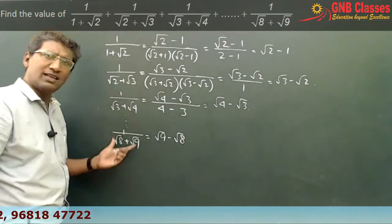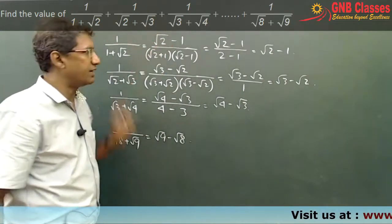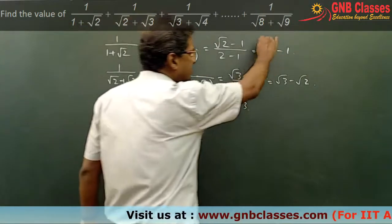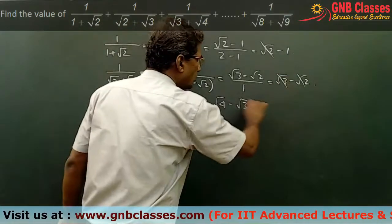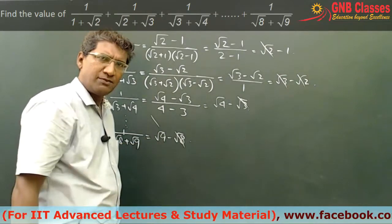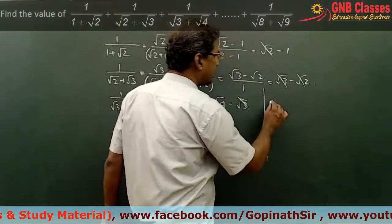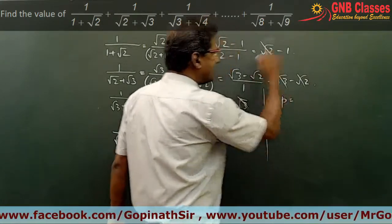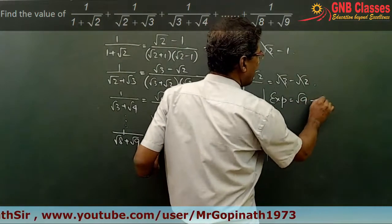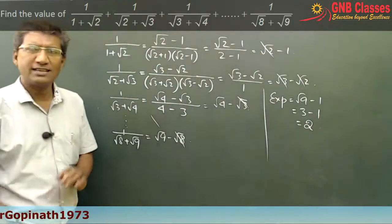If I add all the terms on the right hand side, observe carefully: root 2 cancels, root 3 cancels, and naturally root 8 cancels with the previous root 8. So we are left with root 9 minus 1, and root 9 is 3, giving 3 minus 1 which equals 2.